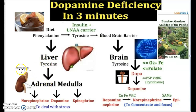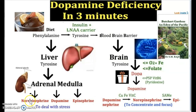Once it has reached the state of tyrosine, it directs itself to the adrenal glands, which are slightly above the kidneys, and it will turn into the adrenal medulla. Once it has reached the adrenal medulla stage, it can turn into norepinephrine, dopamine, or epinephrine. All three of these are used to deal with stress and they are processed through the liver.